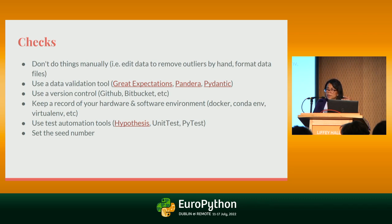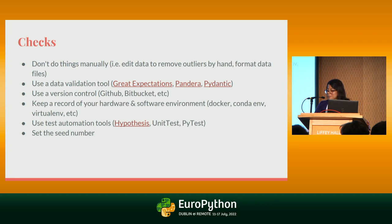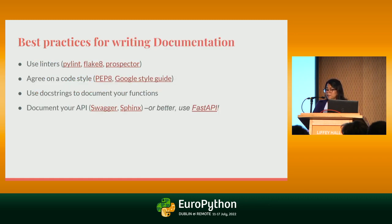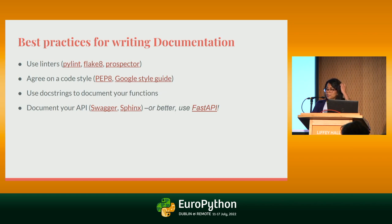There are test automation tools as well. And very importantly, set the seed number so you can reproduce your results. Some useful links are provided. For writing documentation — which is very important and very boring for me — there are tools that can help automate it. Tips include: use linters, agree on a code style, use docstrings to document your functions, and document your API when you're exposing your model. You can use Swagger or Sphinx, but better — use FastAPI. It will help you save lots of time.